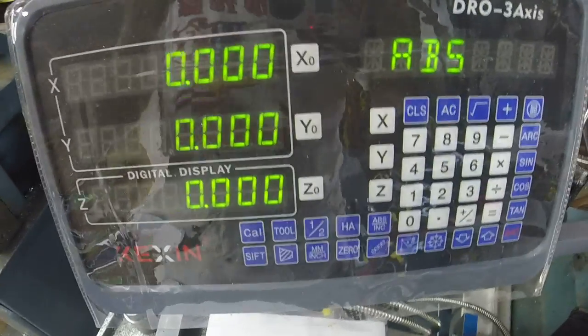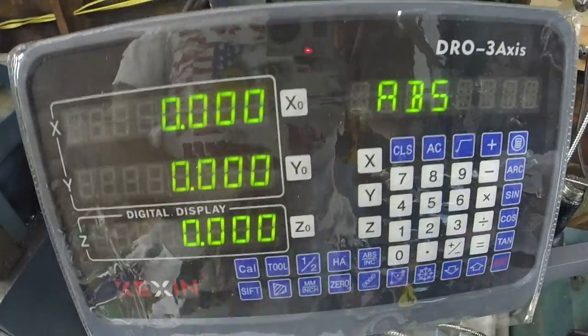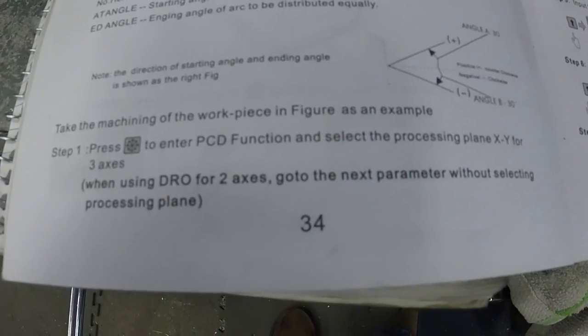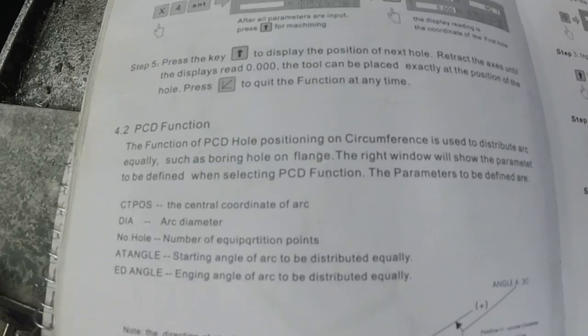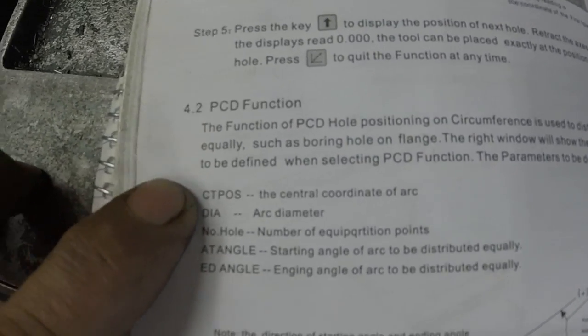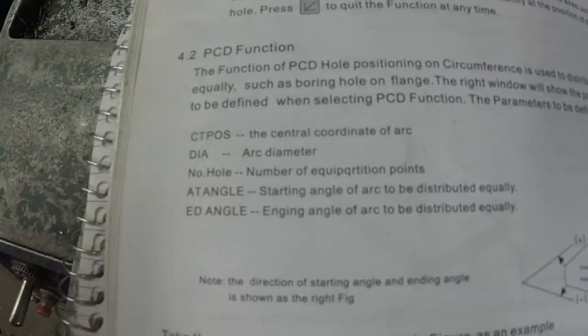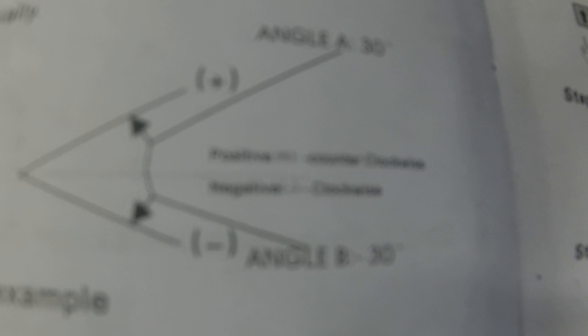Here's the PCD function for the two-axis DROs. The manual page 34 discusses the PCD function and the five parameters needed: center position, diameter, number of holes, starting angle, and ending angle. Specifying a positive angle cuts the hole circle counterclockwise; specifying a negative angle cuts in a clockwise direction.